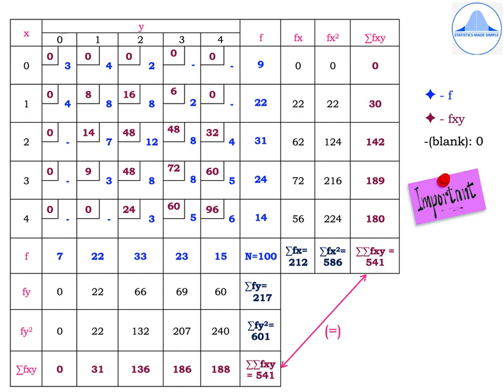The most important step is to find the summation fxy column. The fxy values in each small cell are obtained from the maroon-colored values. For x equals 0, all cell values are 0, sum is 0. For x equals 1, add 0, 8, 16, 6, 0 to get 30. For x equals 2, add 0, 14, 48, 48, 32 to get 142. For x equals 3, add 0, 9, 48, 72, 60 to get 189. For x equals 4, add 0, 0, 24, 60, 96 to get 180. Double summation fxy equals 541.